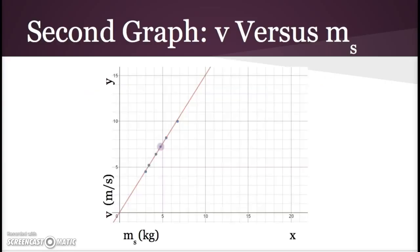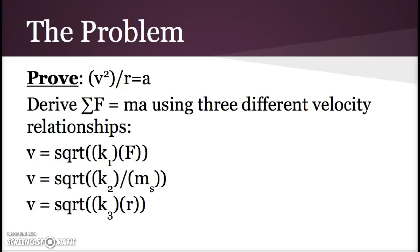We graphed it with velocity as the y-variable and m_s as the x-variable. From this graph, we got v equals square root of k₂ over m_s.